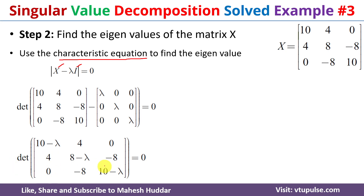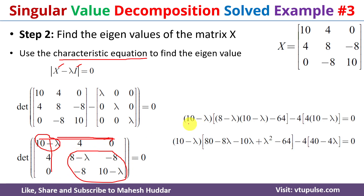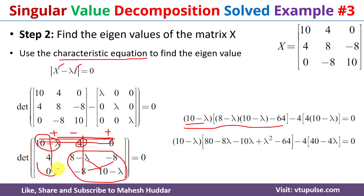The next step is to find the determinant of this 3×3 matrix. For a 3×3 determinant, we consider the first row values: for the first element we eliminate the first row and column and find the determinant of the remaining values. The sign pattern is plus, minus, plus. For the second element we eliminate the first row and second column, getting 4 multiplied by (4·(10-λ) minus 0).